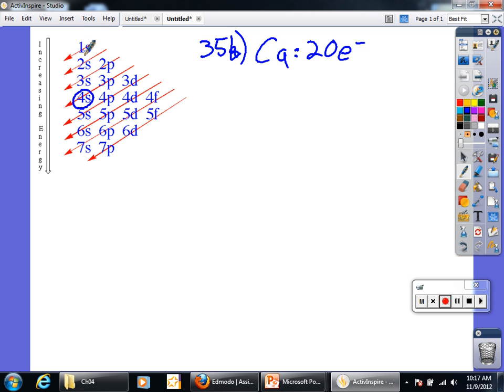1, 2, 3, 4, 5, 6. Oh, okay. Does that help? Yeah. So that's 1S, 2S, 2P, 3S, 3P, then 4S.